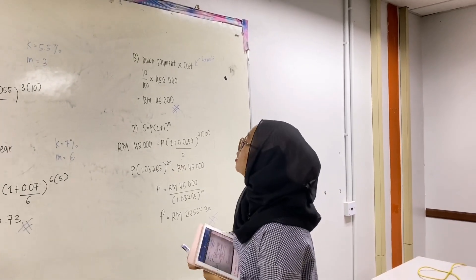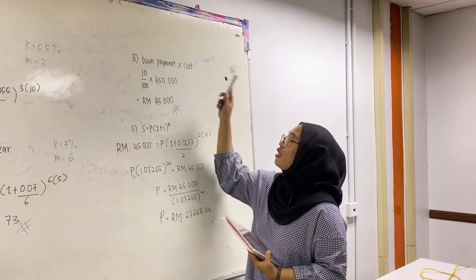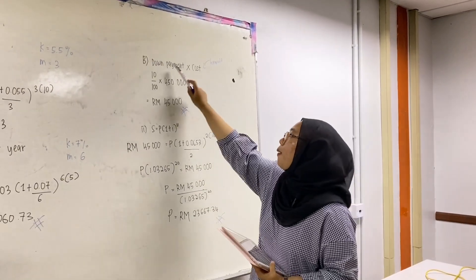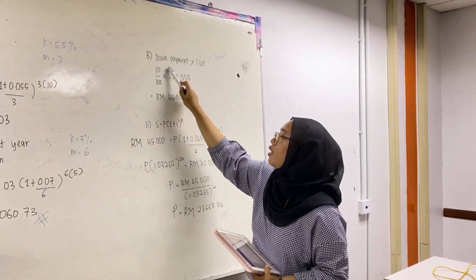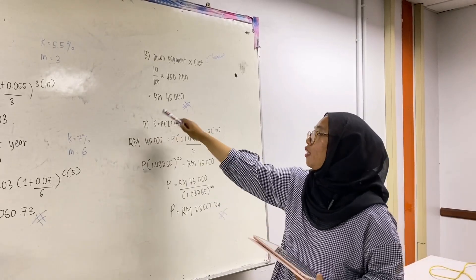For question B, he asked for the down payment. This is the formula of the down payment: down payment equals cost. The down payment given is 10% equals cost, which is we will get $45,000.